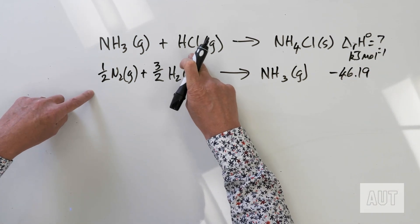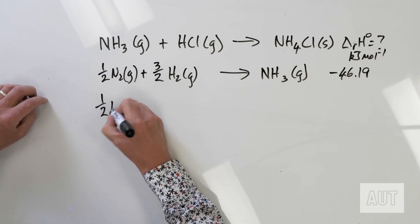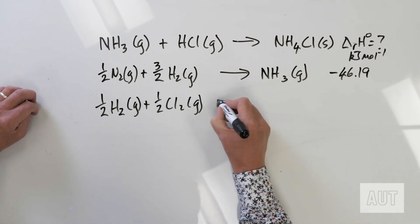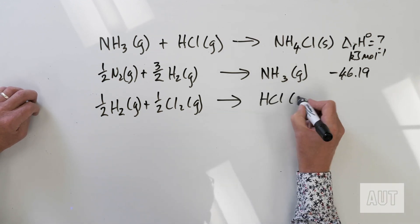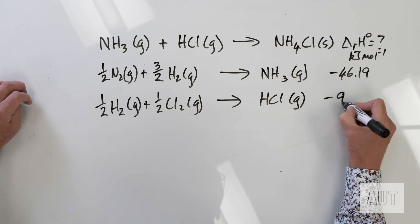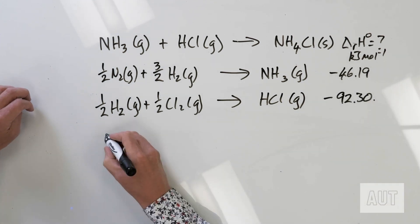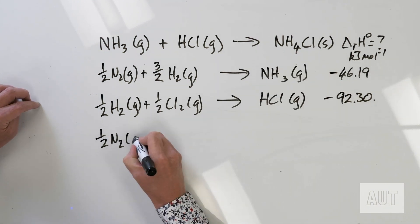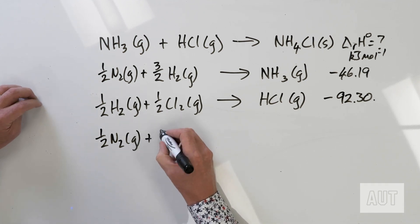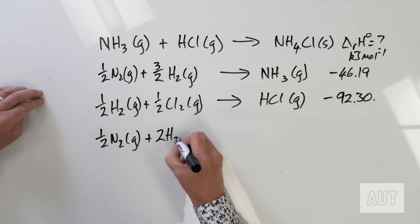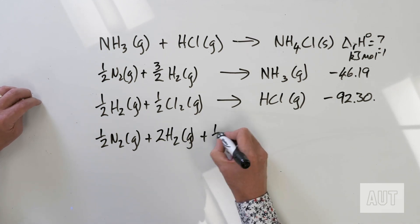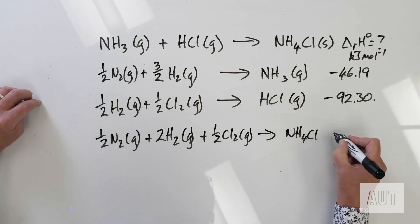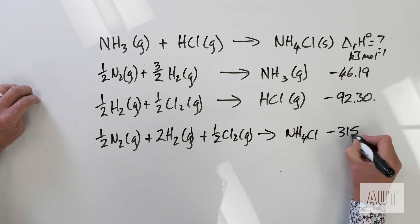For HCl, how do we write that as an enthalpy of formation reaction? It's going to be one half H2 gas plus one half Cl2 gas, giving one mole of HCl gas — that's minus 92.30 kJ per mole. And finally for ammonium chloride, we have one half N2 gas plus 2H2 plus one half Cl2 gas, going to one mole of ammonium chloride — that's minus 315.4 kJ per mole.